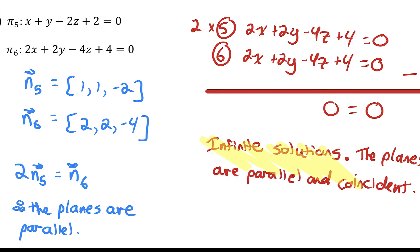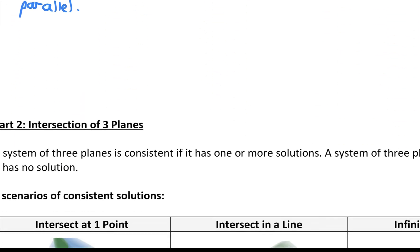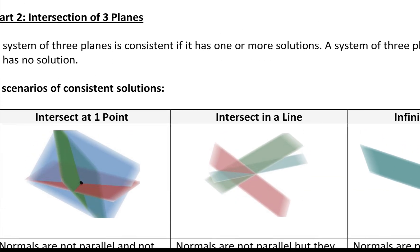That's it for the first part of this lesson, where we're finding the intersection of two planes. You now know all three scenarios that could happen and algebraically how to tell which scenario you have. Make sure you watch the next video as well, where I'll go through how we find the solution to a system of three planes.